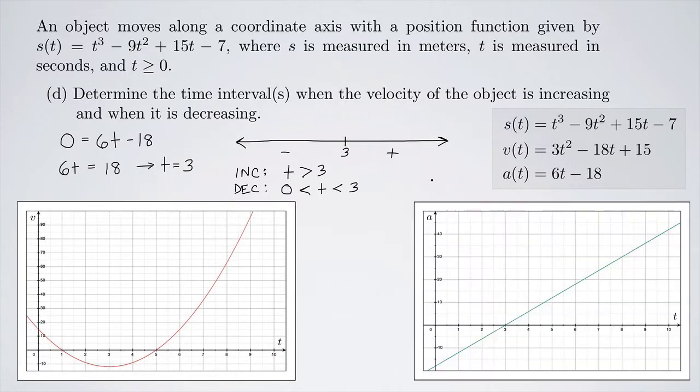Looking at the acceleration function, it is zero at t equals 3 — that's our critical point. Remember, the acceleration is the slope of the velocity function, so when it's negative the velocity is decreasing, and when it's positive the velocity is increasing.